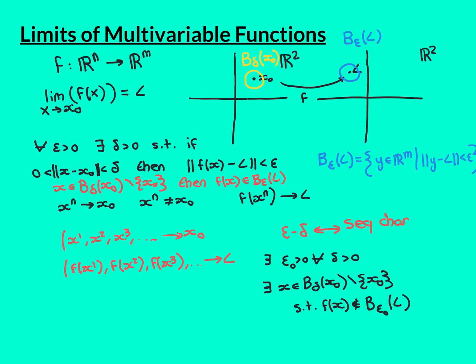Then halve delta to one-half. Again, in the deleted delta-one-half ball around x0, there must be a point mapped outside the epsilon-zero ball around L — that becomes the second term. It might actually be the same point as the first term, since a point in the radius-one-half ball is also in the radius-1 ball. That's fine. Eventually delta will be small enough that we can't reuse that point, but it doesn't matter if the same point appears multiple times in the sequence.